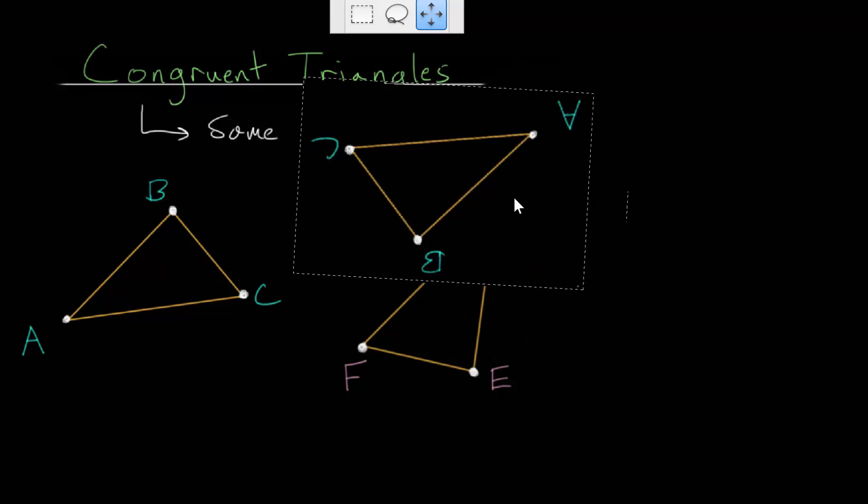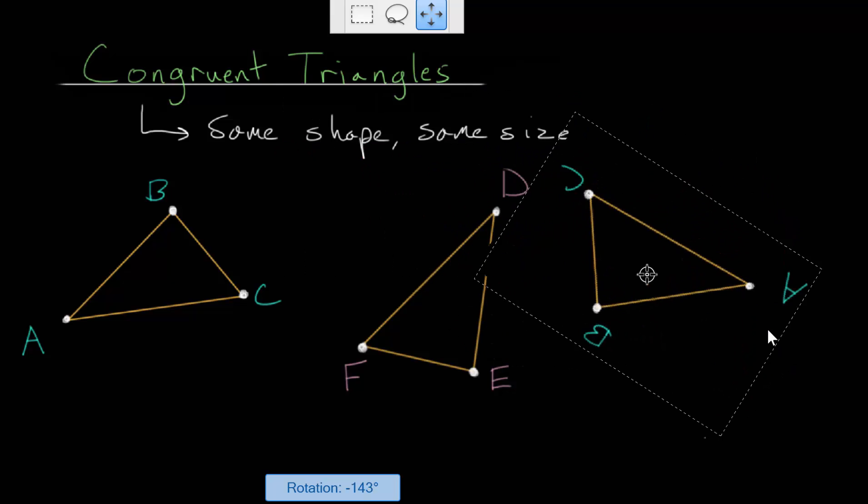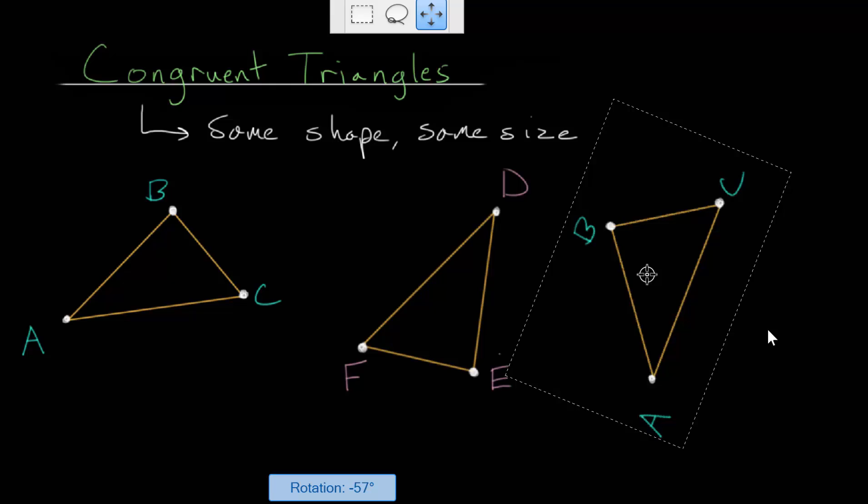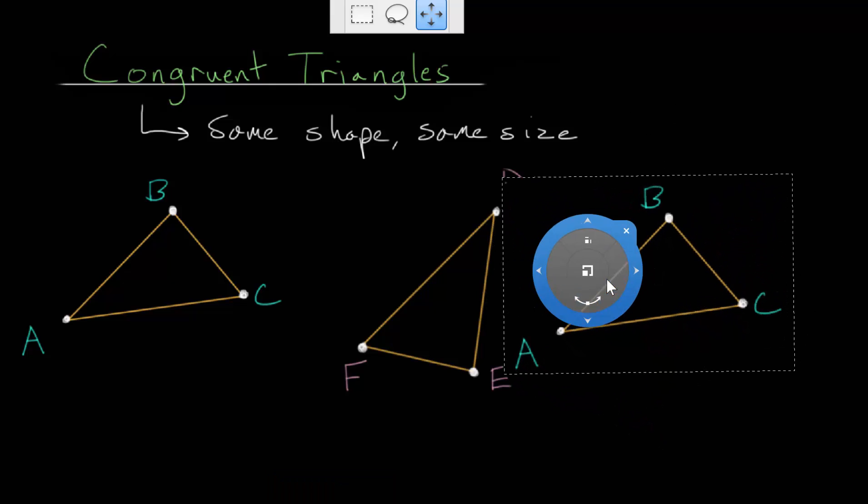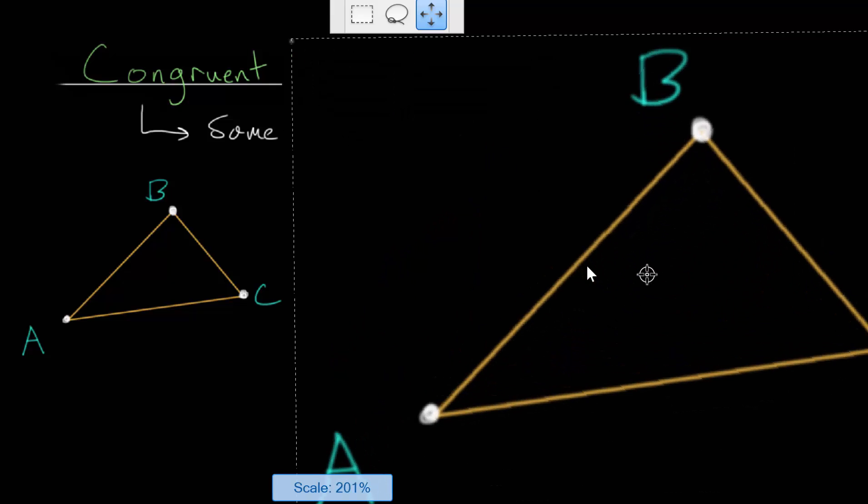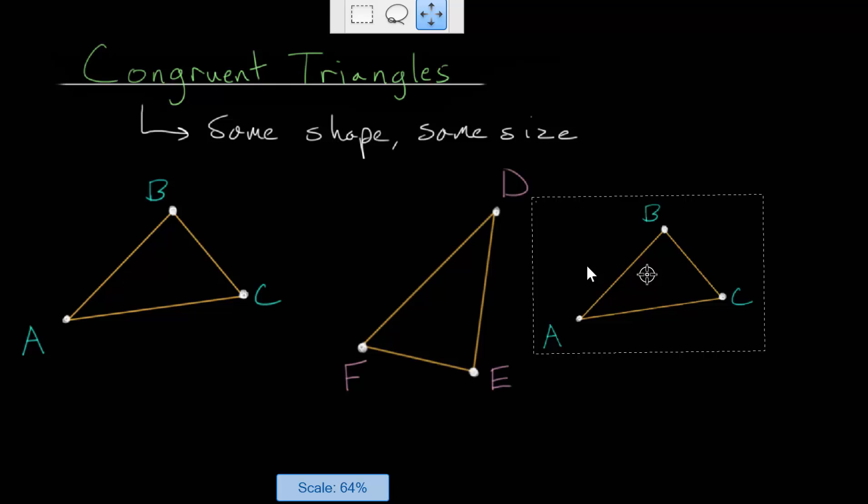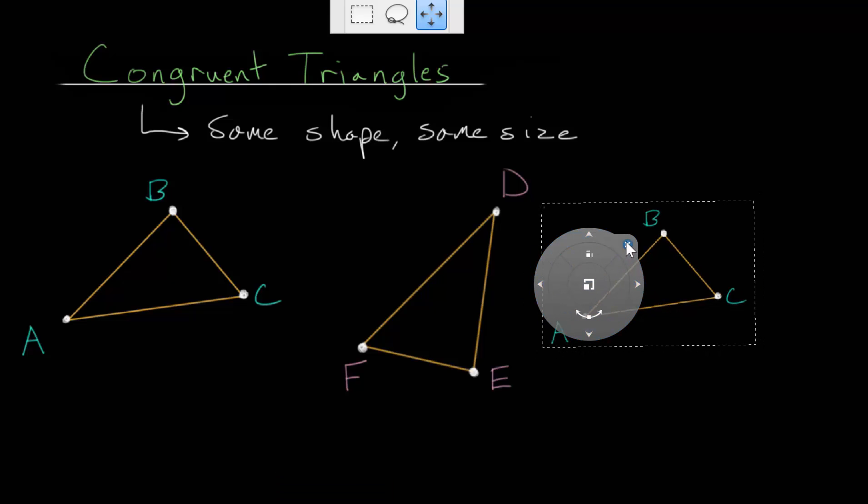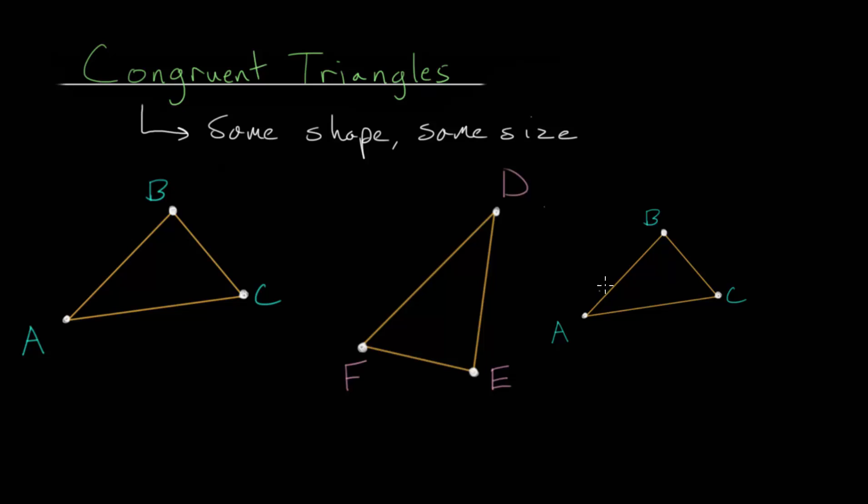But if I were to take the triangle, let me put it back to its original orientation, and if we took this and scaled it, so either made it much smaller or much bigger, this new triangle will no longer be congruent. But it will be what we call similar. It will have the same shape, but no longer the same size.